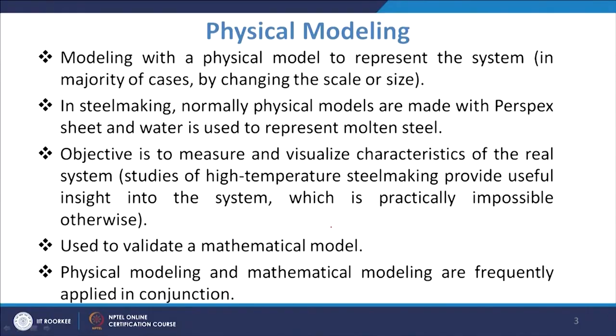Physical modeling and mathematical modeling are frequently applied in conjunction. Many times when going for mathematical modeling we also do physical modeling, so that more scientific faith can be placed in the mathematical model. When doing physical modeling, there can be an infinite number of experimental permutations and combinations, so we can use the mathematical model to limit those sets of experimentations and predict the effect of input parameters on the output performance measures.